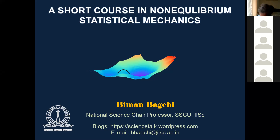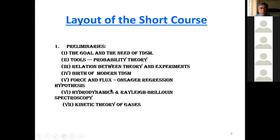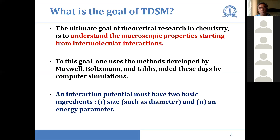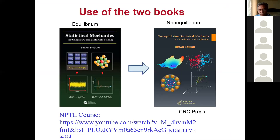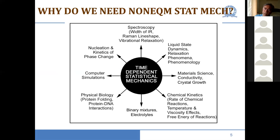With that introduction, we'll start. I'll briefly review what we did last time. We did some goals and preliminaries. These are the two books Ranjit talked about — the left one is available, the other is still being written but has also become a very long book. I discussed the scope of time-dependent statistical mechanics, including phase transitions and similar things in equilibrium statistical mechanics.